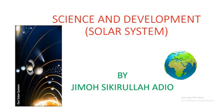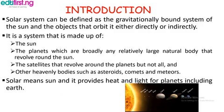Let's proceed. Introduction: the solar system can be defined as the gravitationally bound system of the Sun and the objects that orbit it, either directly or indirectly. It is a system that is made up of the Sun itself and the planets, which are broadly any relatively large natural body that revolves around the Sun.